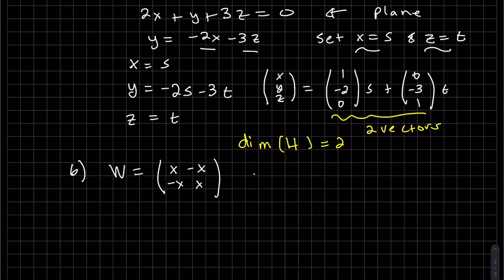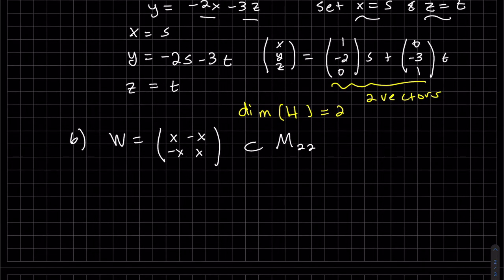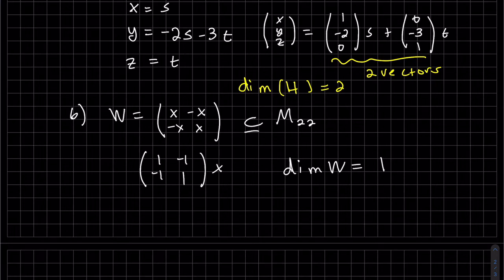This is a subset of m2, 2. We can factor out that x. And that's just one vector. So this is 1. Again, the 1 matrix spans the entire space, because all these are the same variable.